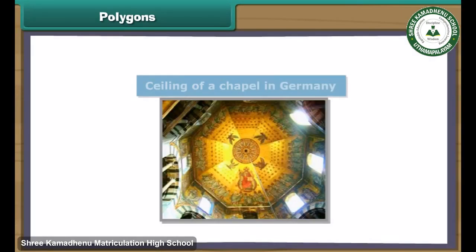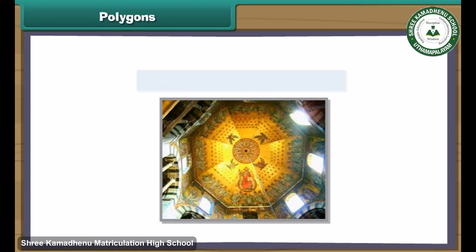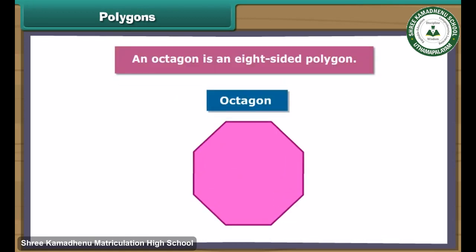This is the image of the ceiling of a chapel in Germany. It has eight sides. An octagon is an eight-sided polygon.